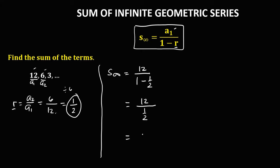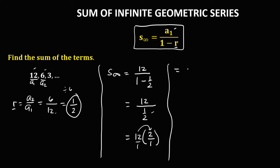Then simplify: 12 divided by 1/2 — we can rewrite this as 12 times the reciprocal of 1/2, that's 2 over 1. Multiply the numerators: 12 times 2 is 24, over the denominators: 1 times 1 is 1. Therefore, the sum of this infinite geometric series is positive 24.